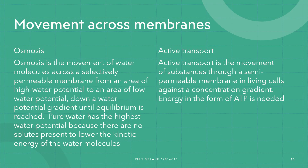Osmosis is the movement of water molecules across a selectively permeable membrane from an area of high water potential to an area of low water potential, down a water potential gradient, until equilibrium is reached. The difference between osmosis and diffusion is that osmosis deals specifically with water molecules. Pure water has the highest water potential because there is no solute present to lower the kinetic energy of the water molecules. Active transport is the movement of substances through a semi-permeable membrane in a living cell against a concentration gradient. Energy in the form of ATP is needed — unlike diffusion, active transport requires energy.